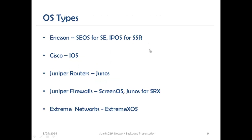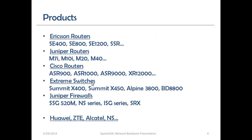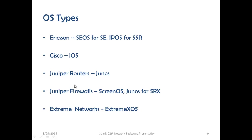We also need to understand the OS types, because different vendors have different platforms. For Ericsson, they maintain the Smart Edge OS, which is SOS for Smart Edges, and IPOS for SSR. Cisco has always been on IOS. Juniper maintains JunOS, seen across their M-series such as M7i, M10i, M2040, and so on. Juniper firewalls also use ScreenOS, and Junos for SRX. For Extreme Networks, you have the ExtremeXOS. You need to build competence and familiarity with these platforms to integrate or work on these vendor products.